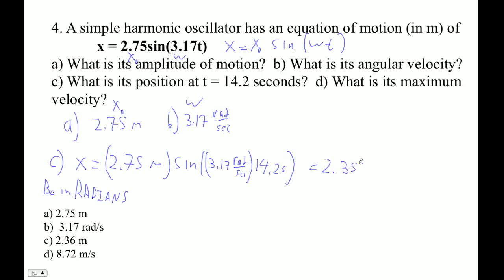What is its maximum velocity? V is plus or minus omega times square root of x naught squared minus x squared. For maximum velocity, you make x zero.